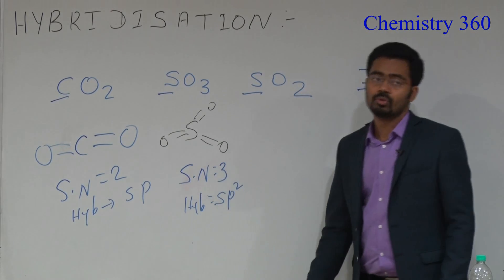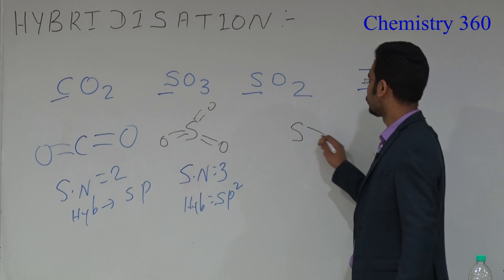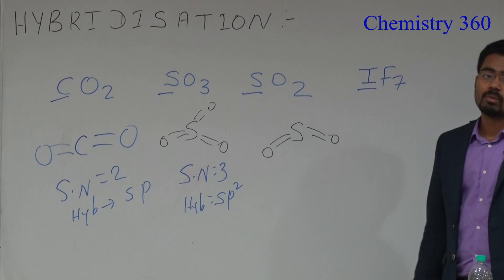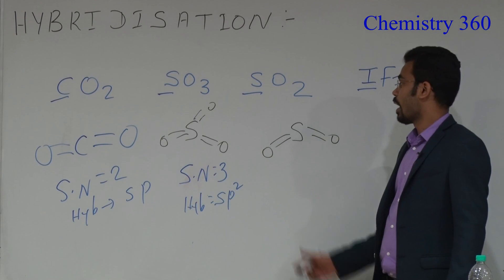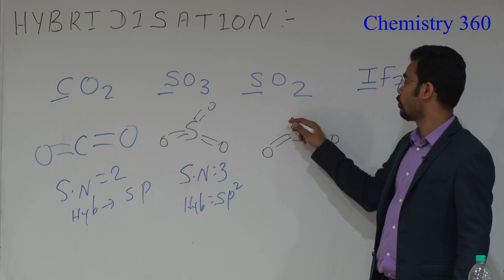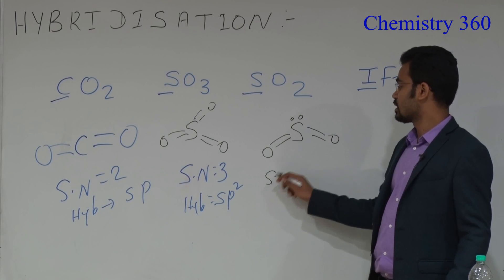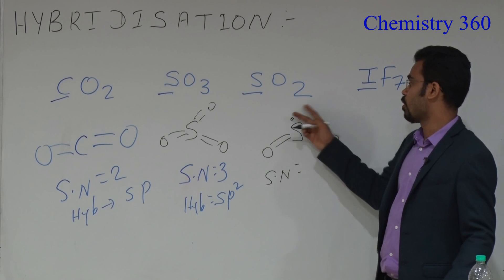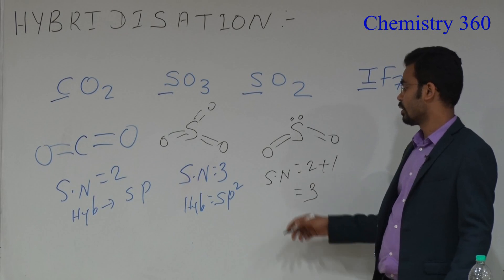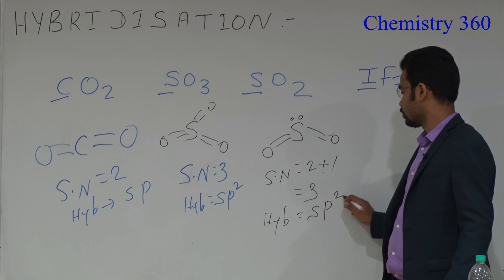For SO2, oxygen can form a maximum of 2 bonds, and sulfur has 6 valence electrons. 4 electrons participate in bond formation, so 1 pair remains as a lone pair. The steric number equals 2 super sigma bonds plus 1 lone pair, which gives 3. So the hybridization is sp2.